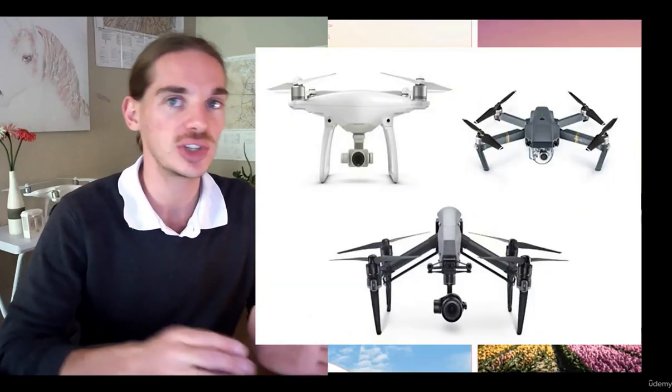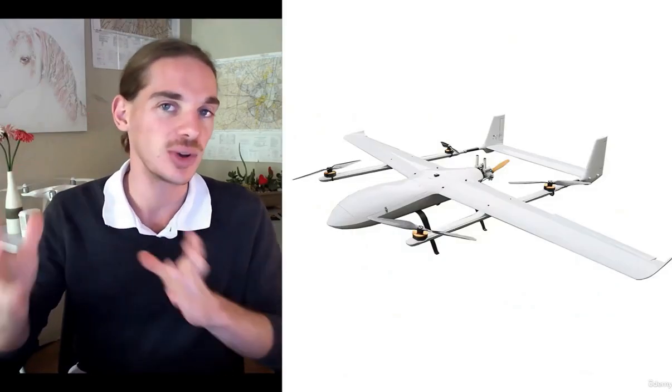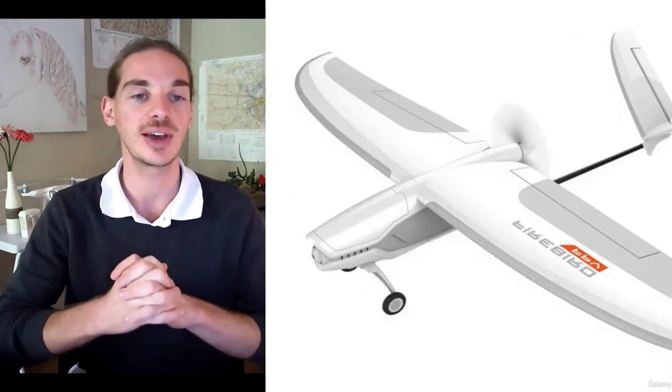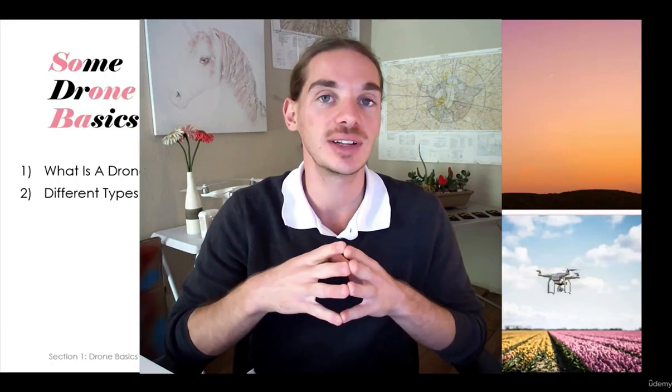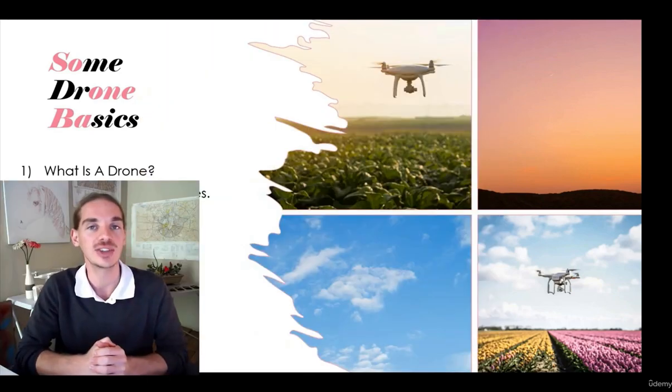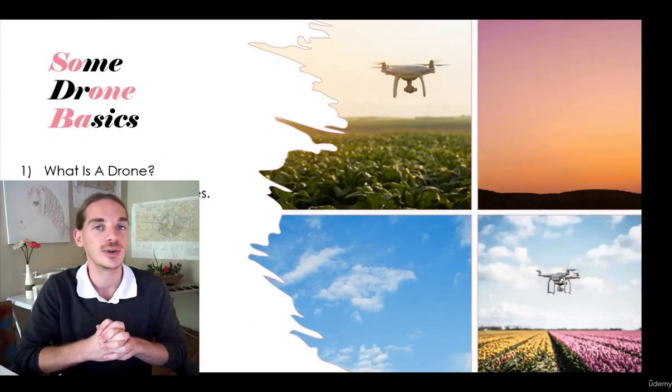Moving on to different types of drones. You've got your multi-rotor drones, fixed wing drones, helicopter drones, and VTOL drones. VTOL stands for vertical takeoff and landing — it kind of mixes the benefits of a multi-rotor and a fixed wing together. Your most common multi-rotor is a quadcopter, meaning it has four rotors or propellers, as you can see in these pictures. You do also get multi-rotors with more than four — six, eight, sometimes even ten — depending on what you're using them for and the weight they're carrying.